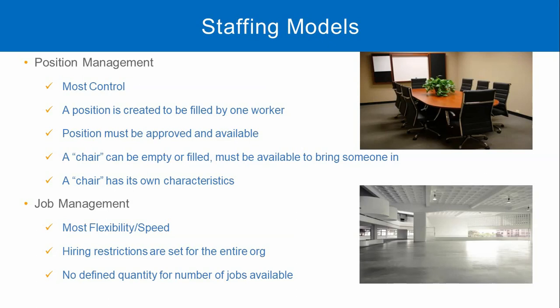Position management enables control for one position at a time. A position must be approved and available for a worker to be hired or transferred into it. We can compare each staffing model to different types of chairs or office spaces. For position management, we can compare it to a formal conference room chair. An empty chair must be available for someone to sit at the table. If we'd like an additional person to sit at the table but there is no chair, we would need to request the additional chair. Once the request is approved, the chair is delivered, enabling an additional person to sit at the table. If a worker leaves the position, the position remains available for another worker to fill.